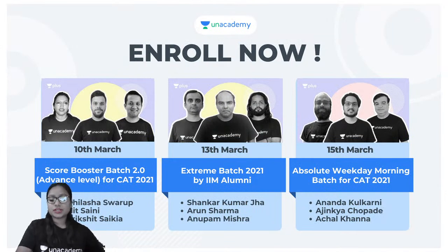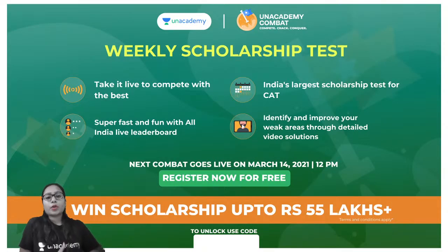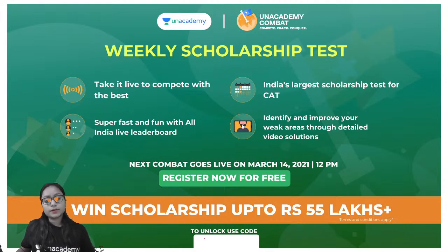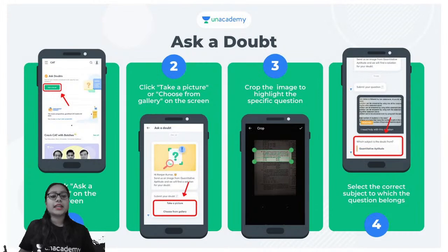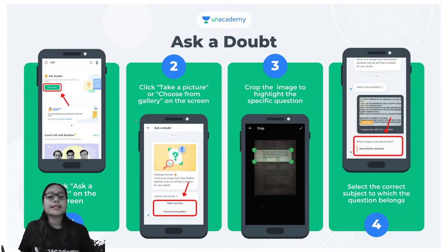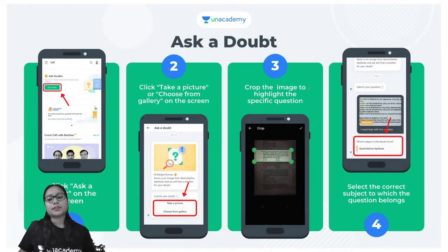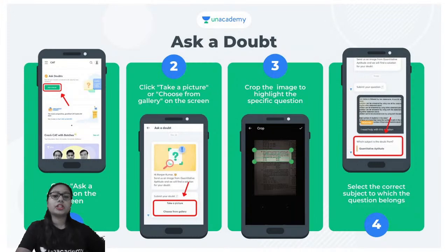This is information about the batches we have recently started — you still have time to join. We also conduct a weekly scholarship test, which you can access using my code AAISH10. If you score well in this test you will get a good scholarship. There is also an 'Ask a Doubt' tab on the app — take a picture of your question, select it from your gallery, crop it so the question is readable, submit it, and choose the subject. Our educators will solve and share the explanation with you as soon as possible.